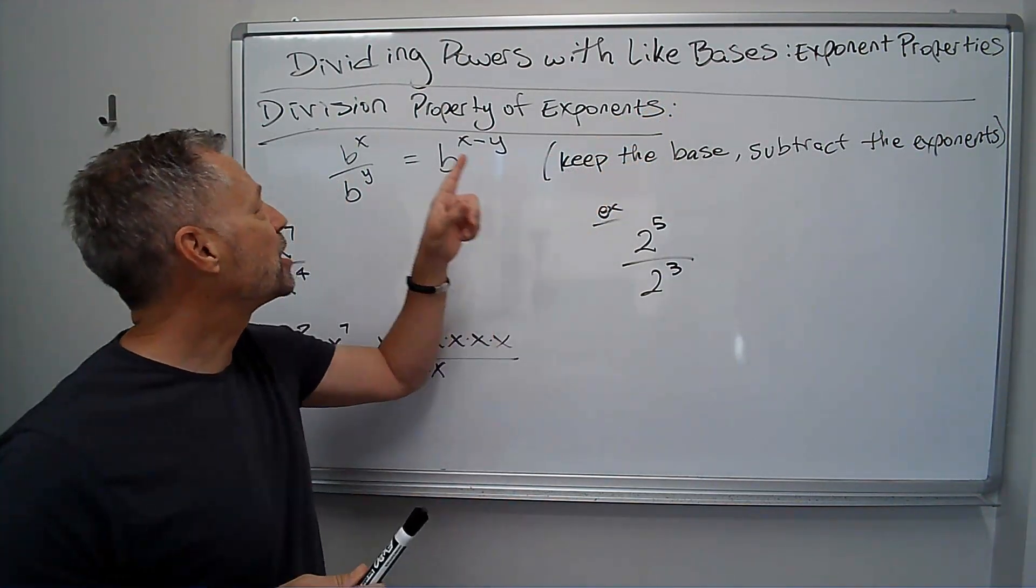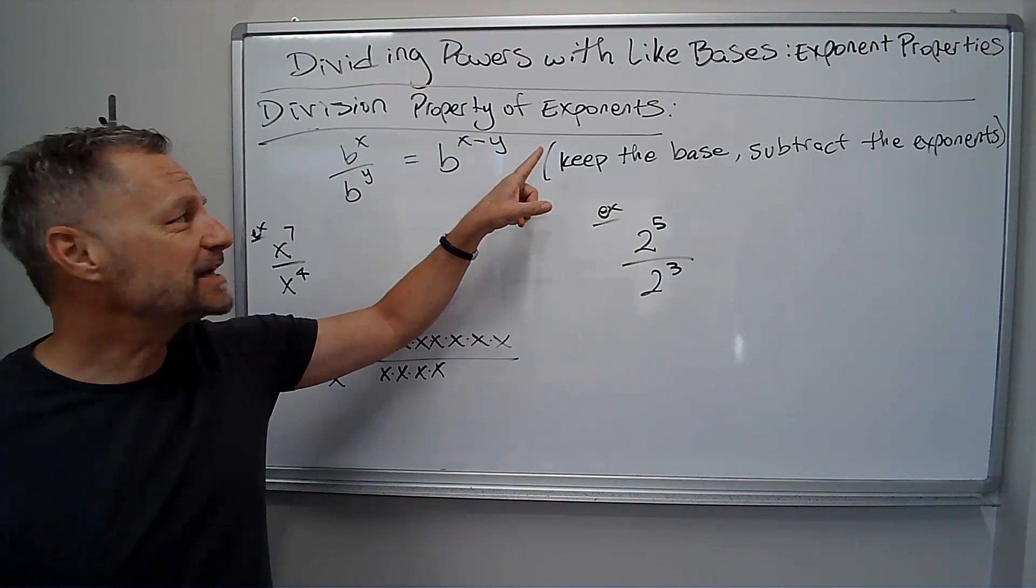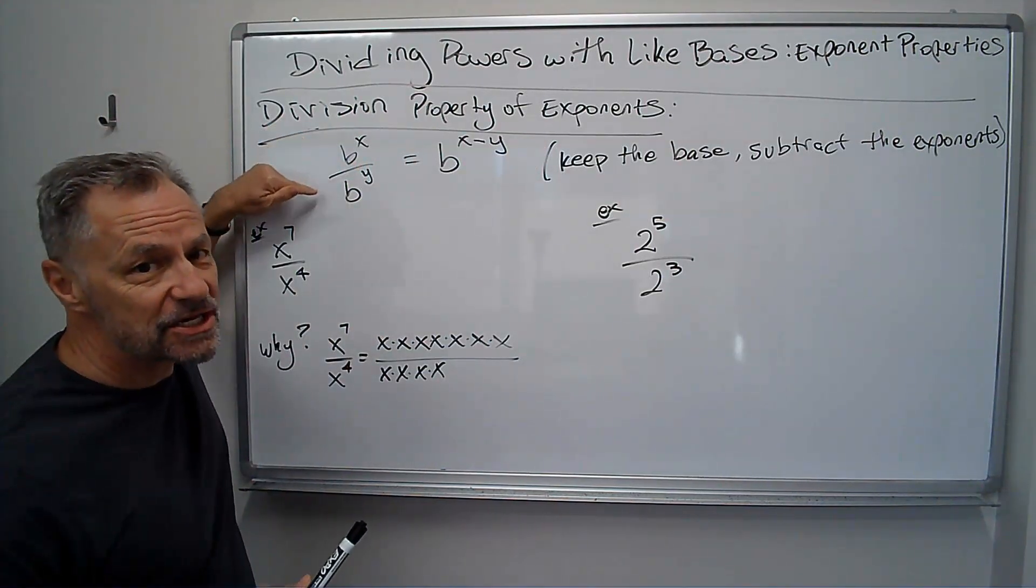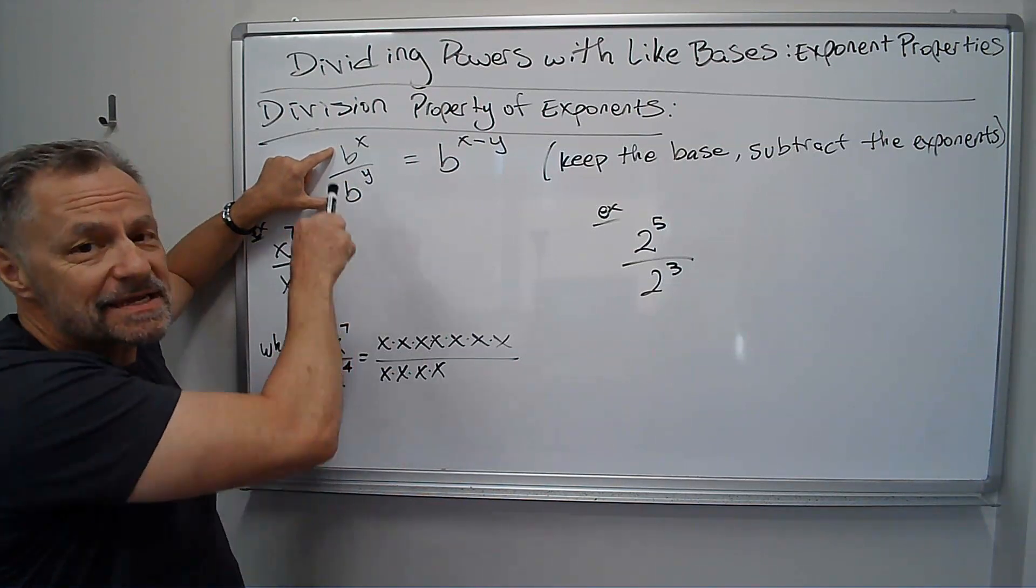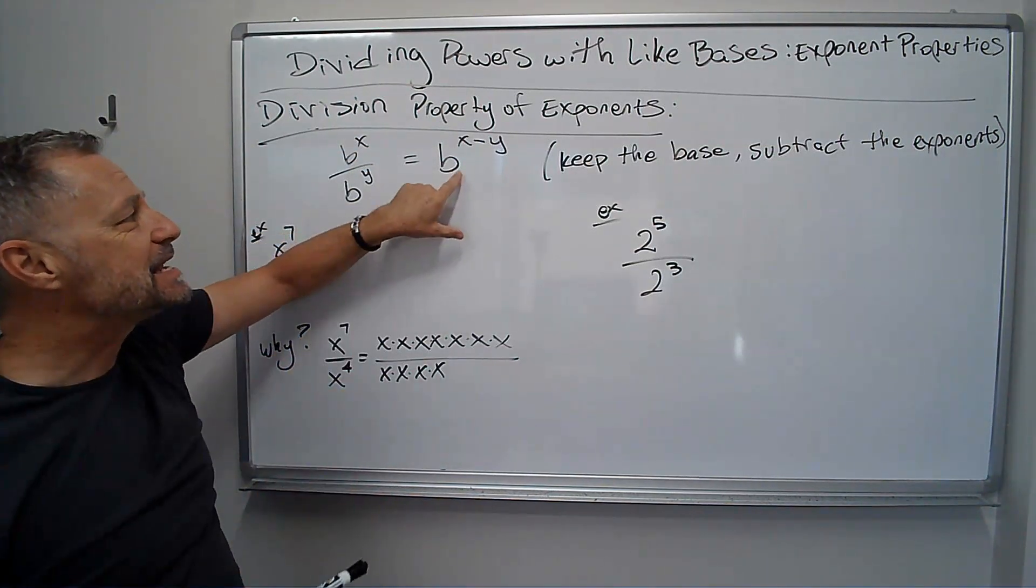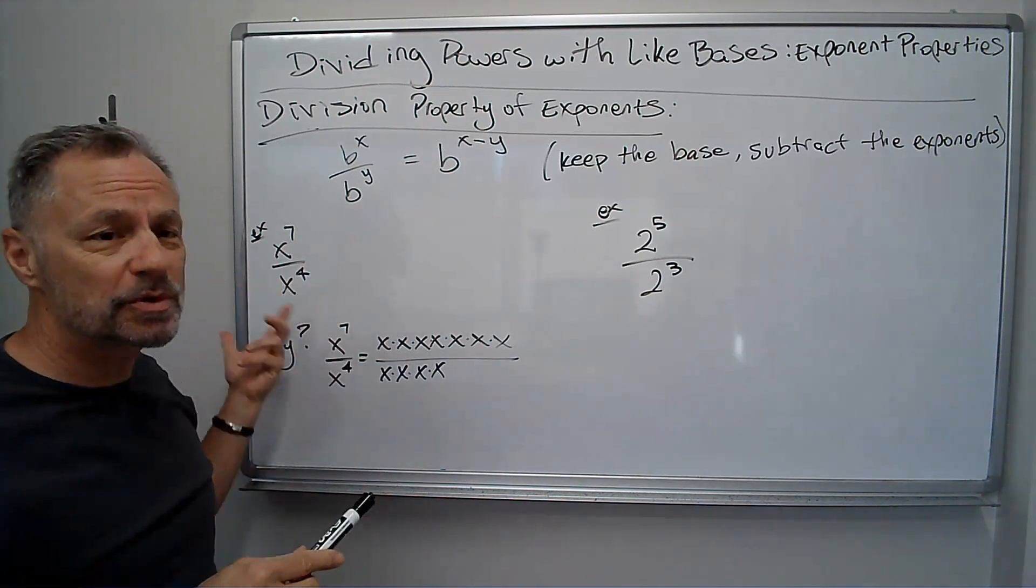Okay, another one of our exponent properties, division property of exponents, says if I'm dividing two powers with the same base, all I do is I keep the base and I subtract the exponents. So it's real simple.